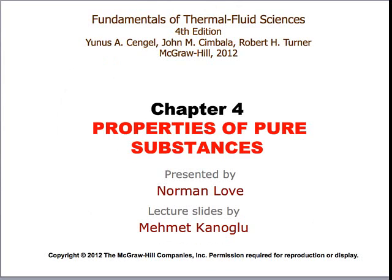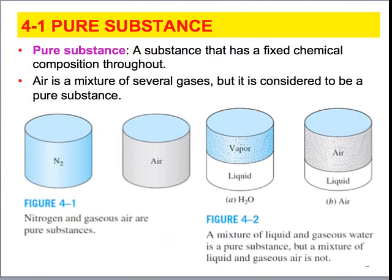So let's start our discussion about chapter 4 and we're going to be talking about properties of pure substances. So what is a pure substance? A pure substance is something that has a fixed chemical composition throughout.